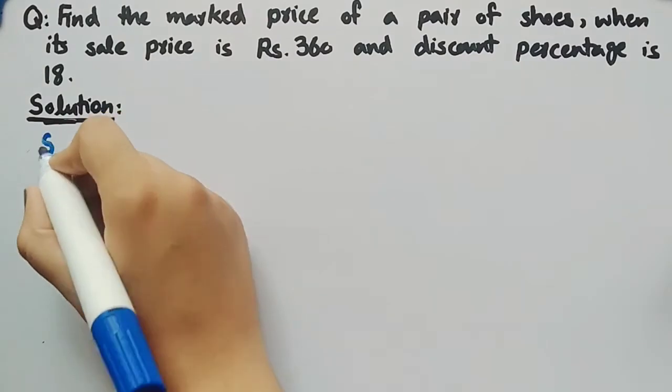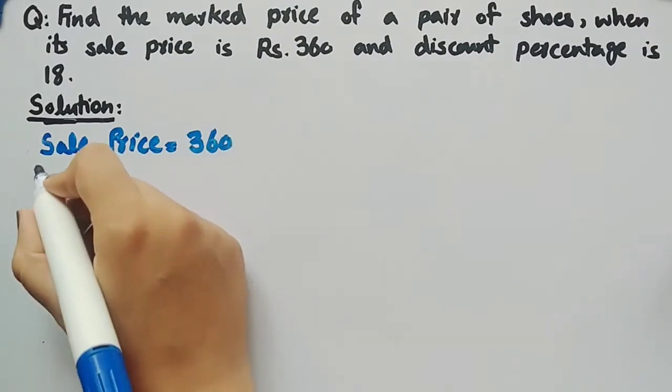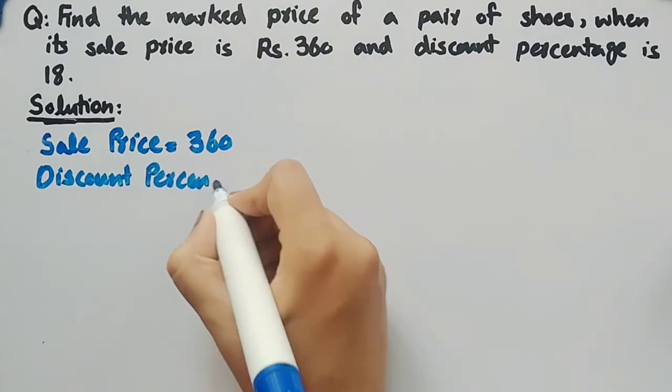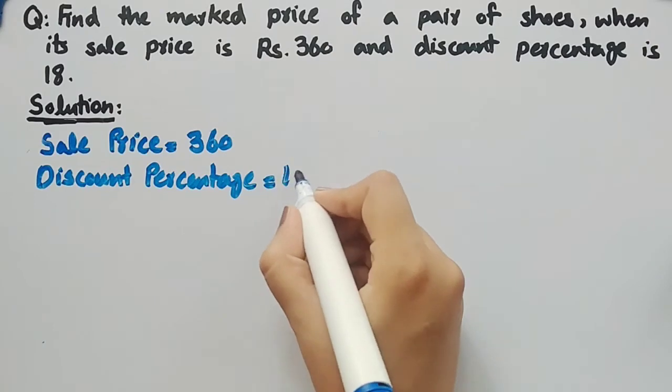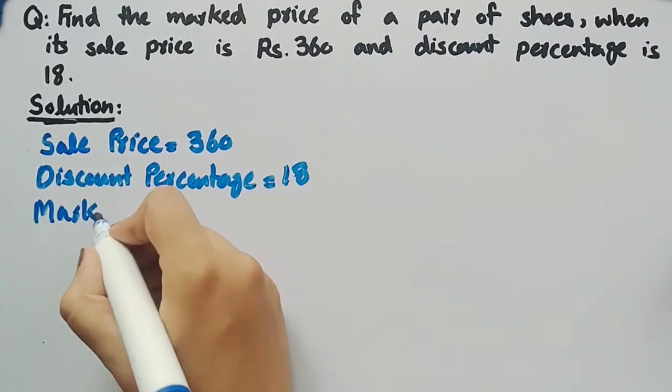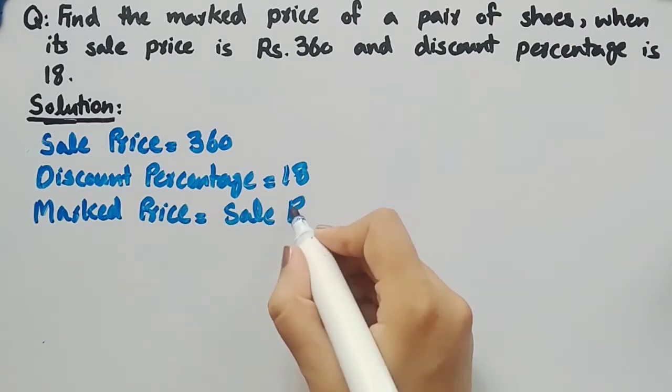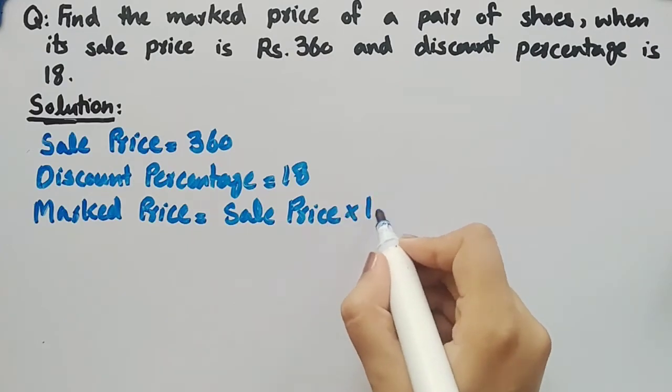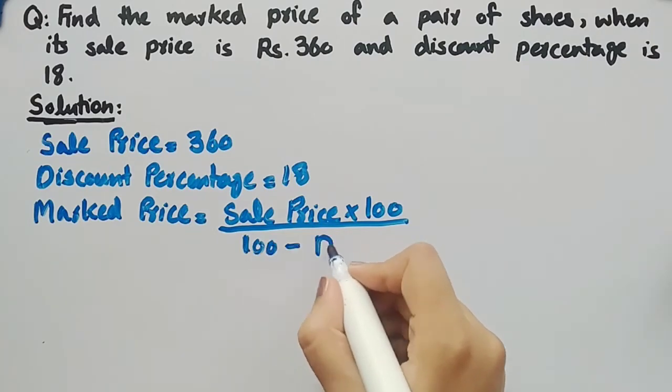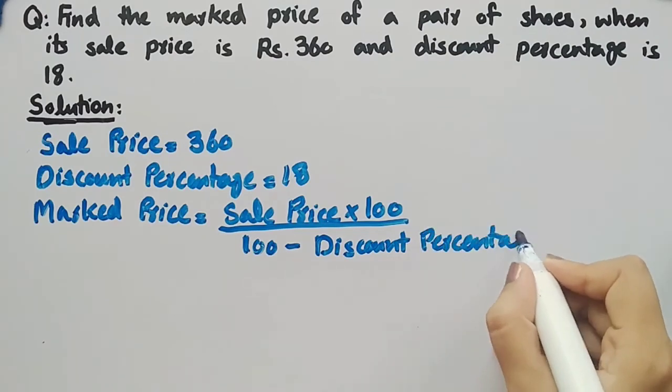It is given that sale price is equal to 360 and discount percentage is equal to 18. The formula for marked price is: Marked Price = Sale Price × 100 ÷ (100 - Discount Percentage). Now we will substitute the values.